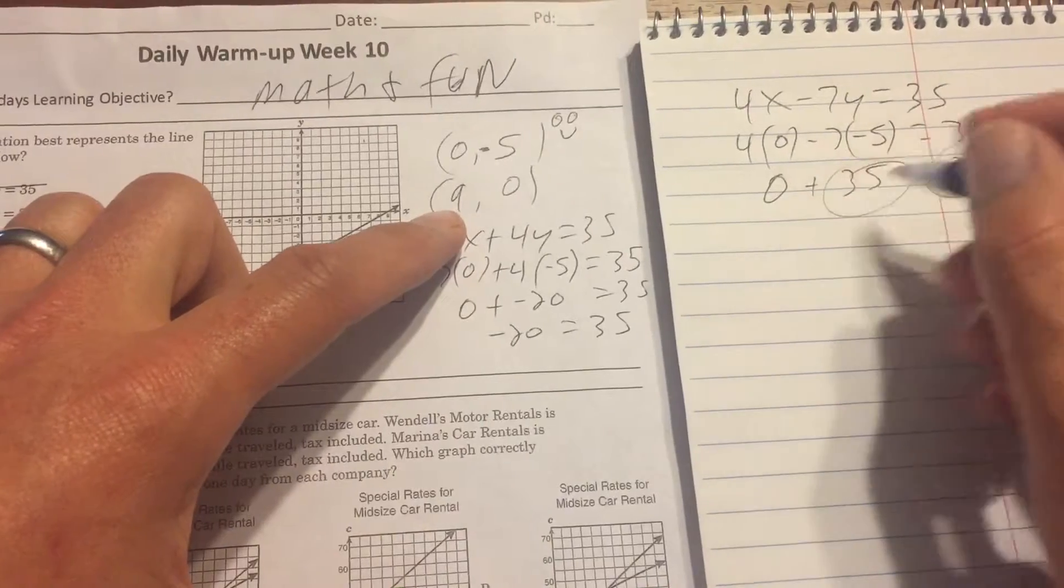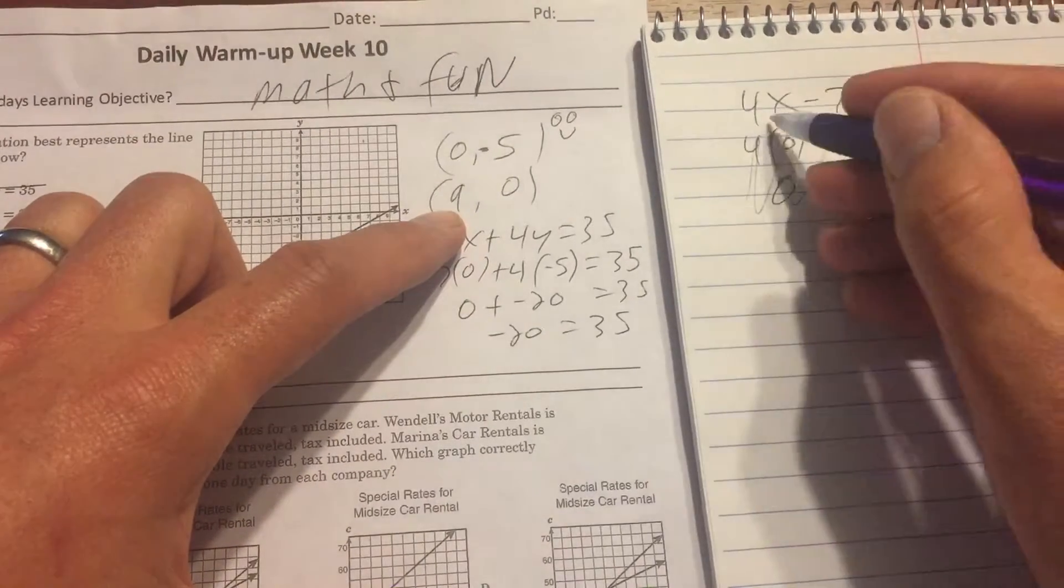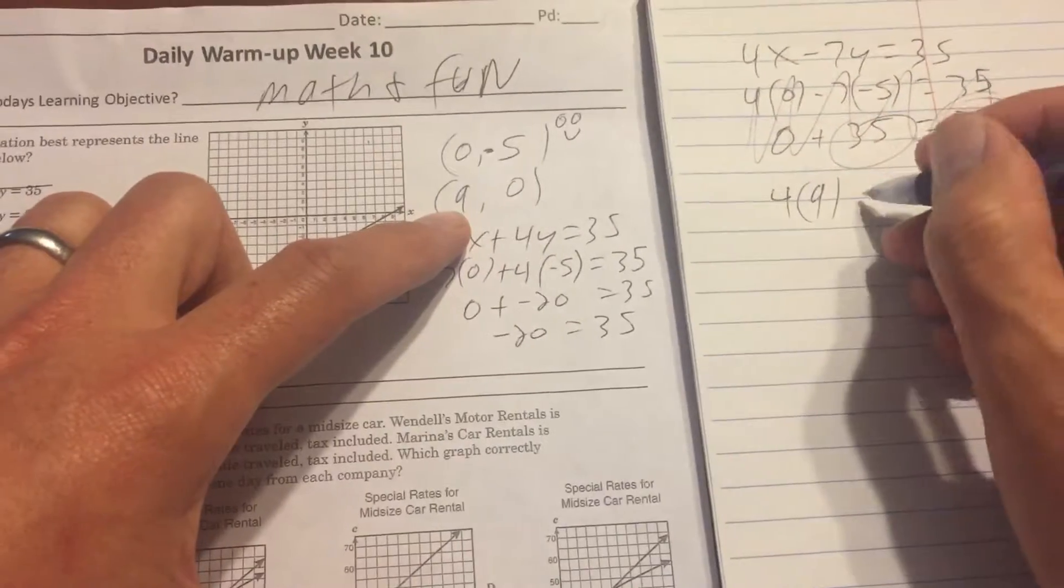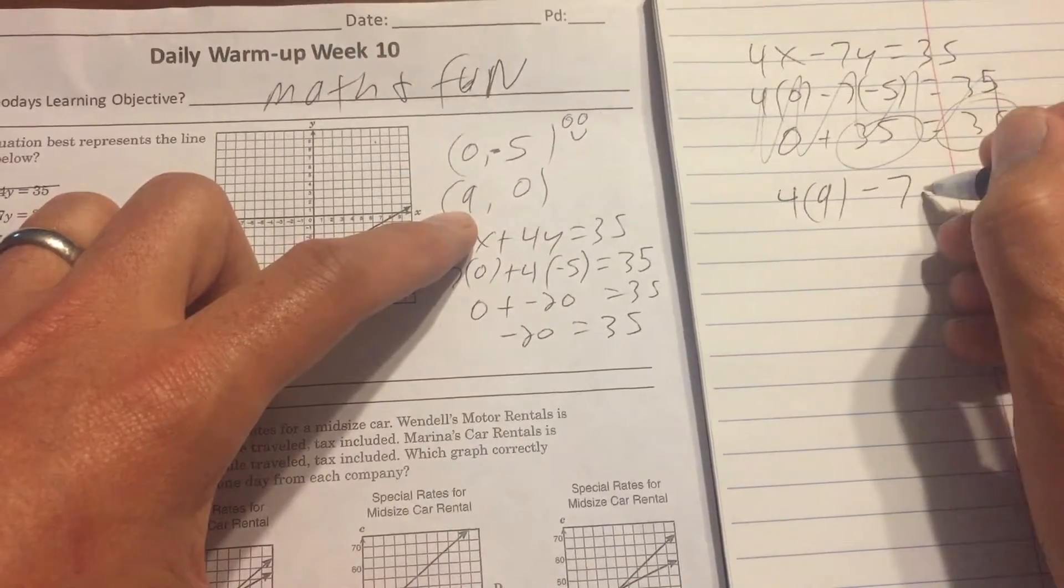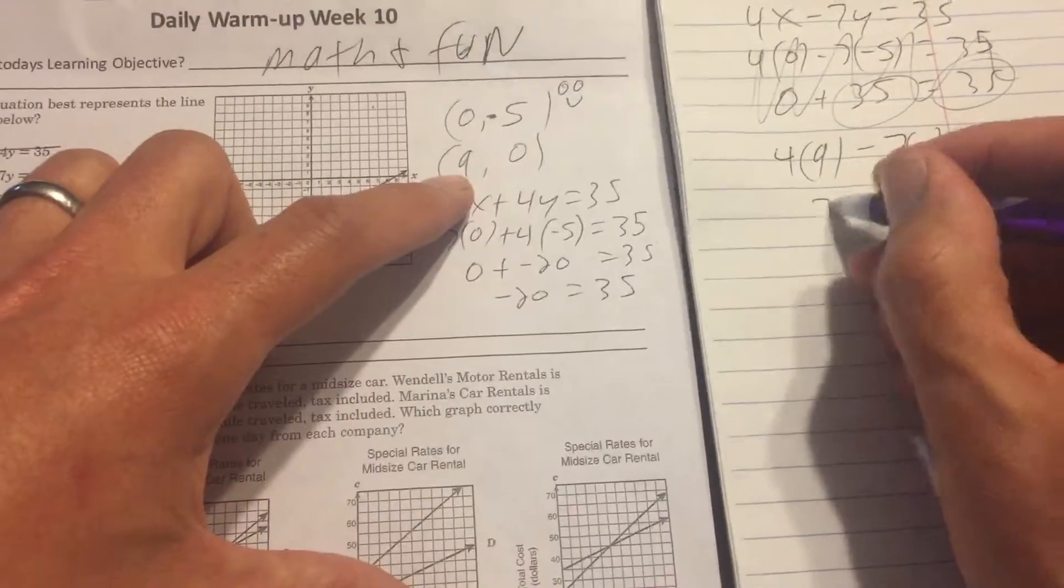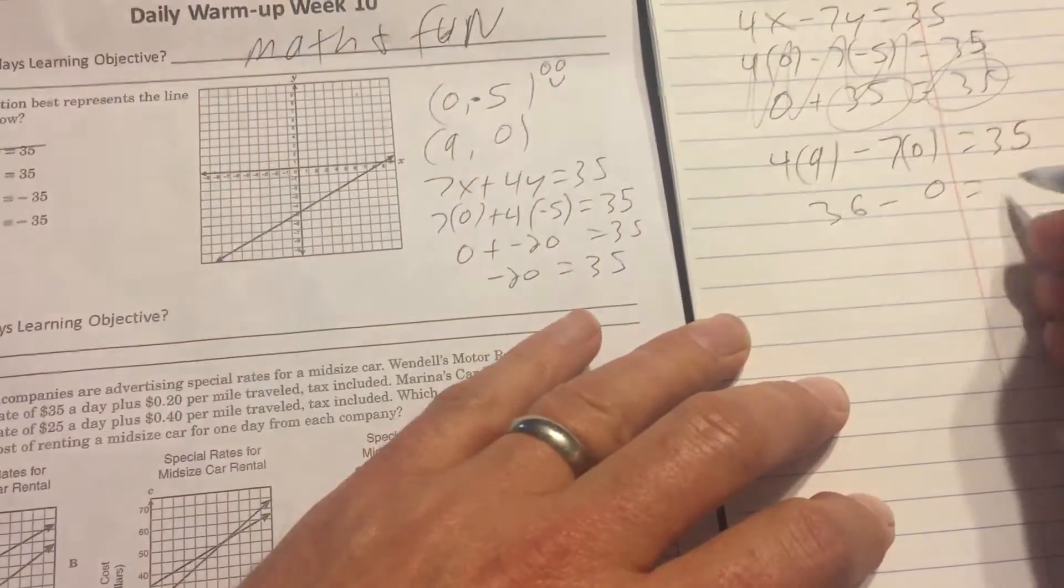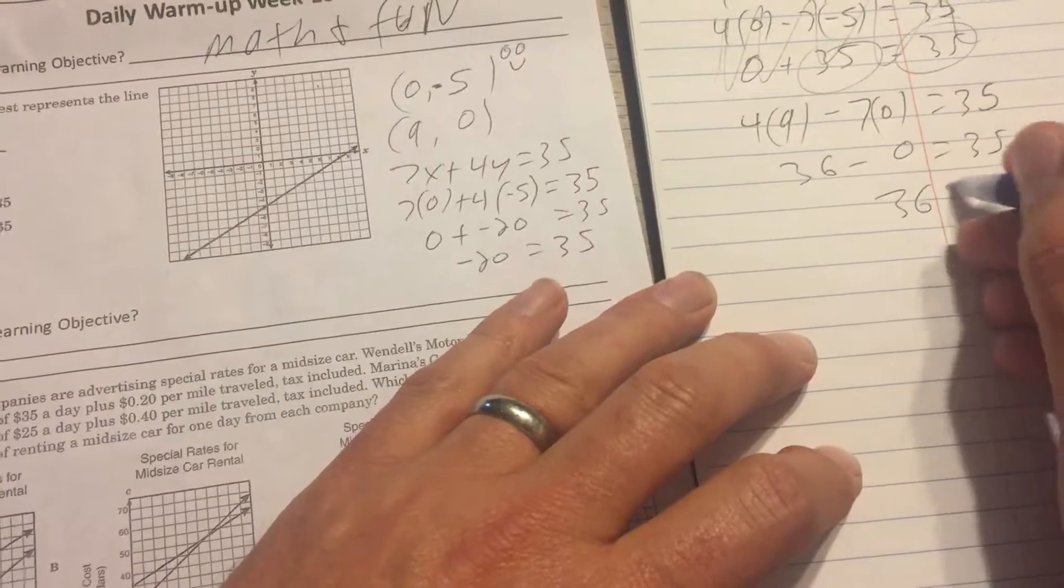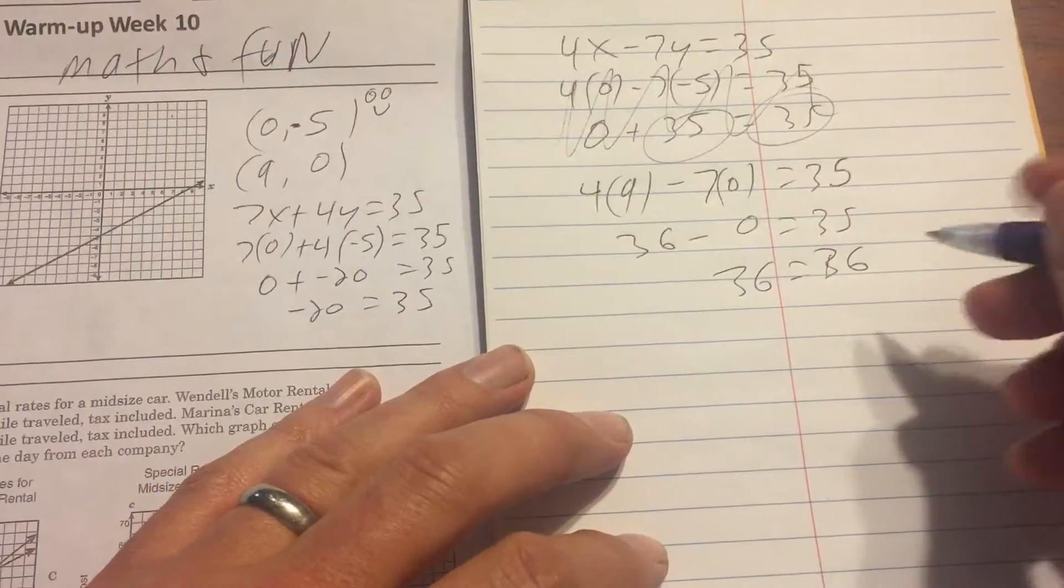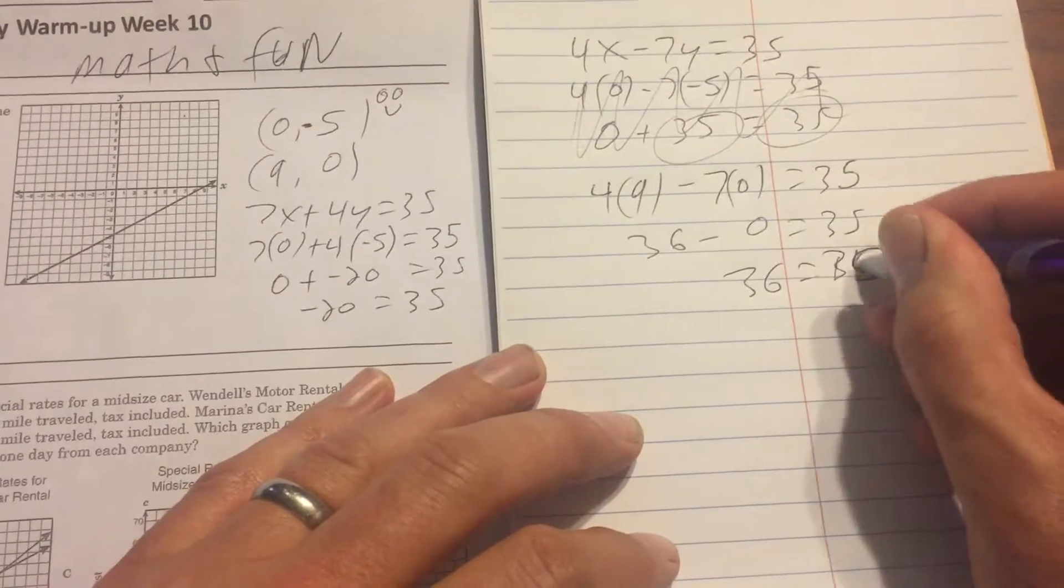Let's try this 9 and 0. So go back to the same equation here at the top, right? Plug it in. So let's get that 4 times 9 minus 7, put the 0 in, is equal to 35. This is going to be 36 minus 0 is equal to 35. Is 36 equal to 36? That's what I was talking about. And is 36 equal to 35? I'm sorry.